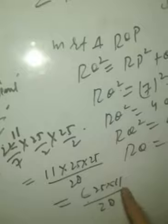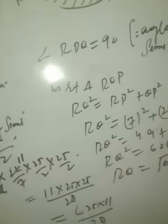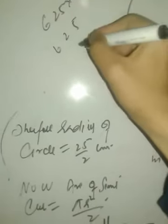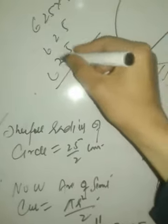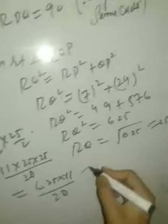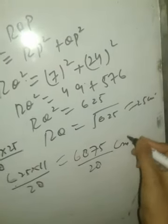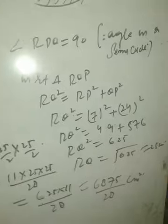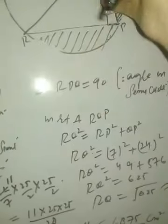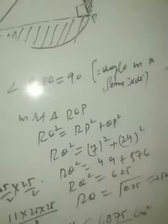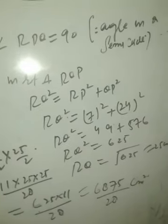So the area of the semicircle is 6875/28 square centimeters. I hope that when you watch this video you have your calculations ready so you can verify quickly. Please pause the video now to note this down before we move forward.